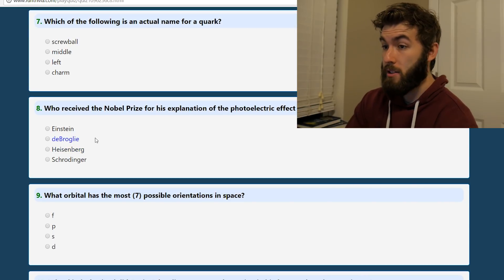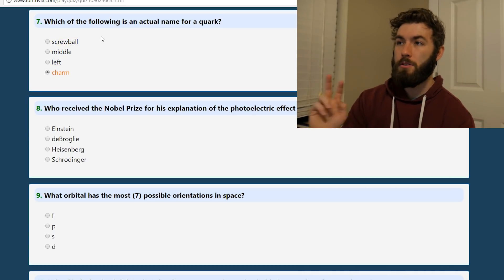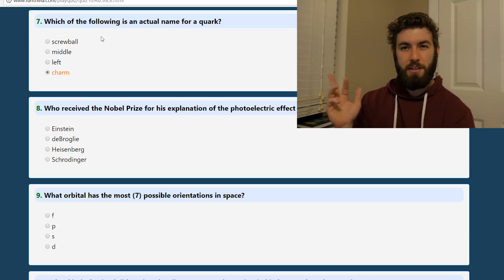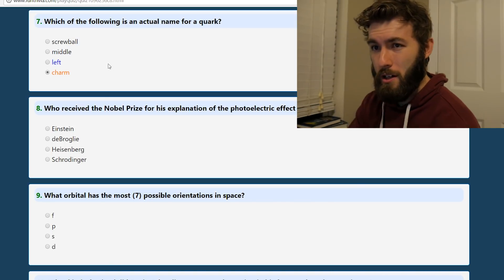Which of the following is an actual name for a quark? A screwball? That would be a great name. Middle, left, and charm. It's charm. But there are those two quarks that have like nicknames. I think it might be top and bottom that sometimes go as, is it beauty and truth? I think it's that. Don't quote me on it.